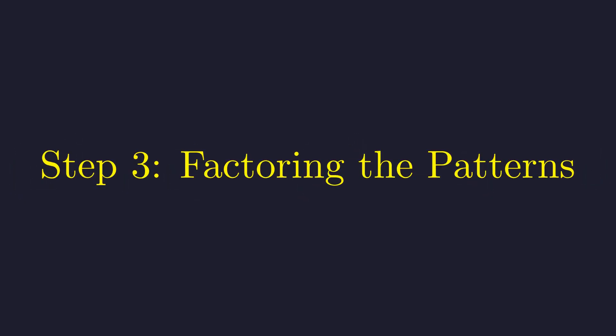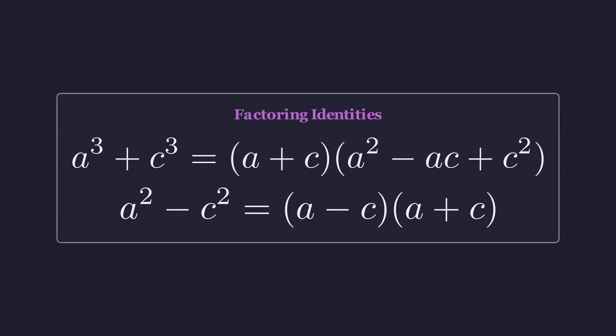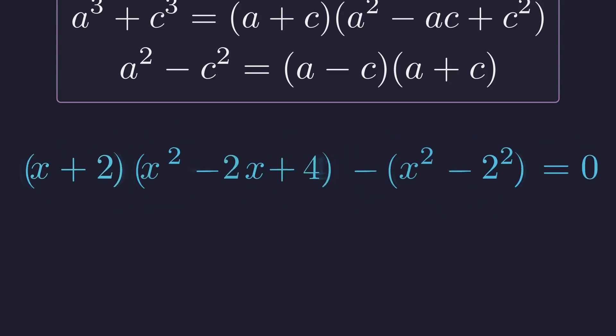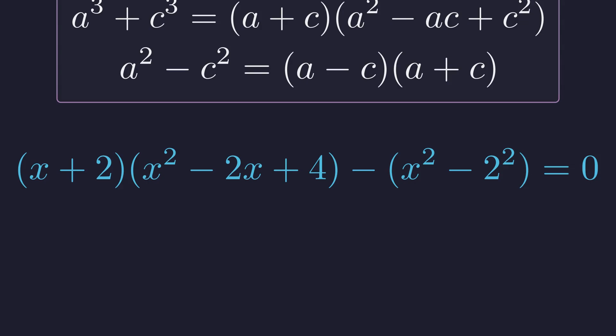Now we can apply the standard factoring formulas to each group: the sum of cubes formula and the difference of squares formula. Let's write 8 as 2 cubed and 4 as 2 squared to match these formulas. The sum of cubes factors first. This becomes x plus 2 times x squared minus 2x plus 4.